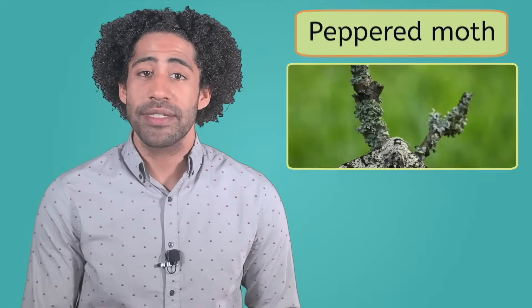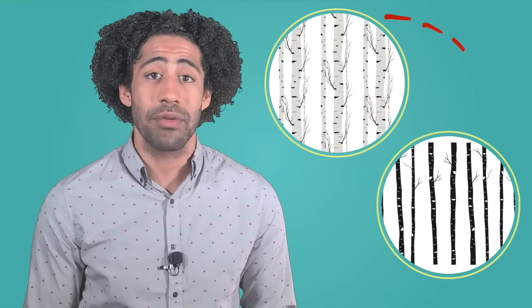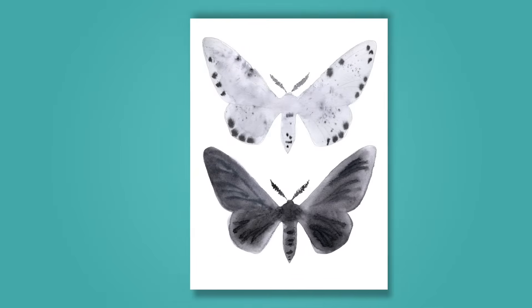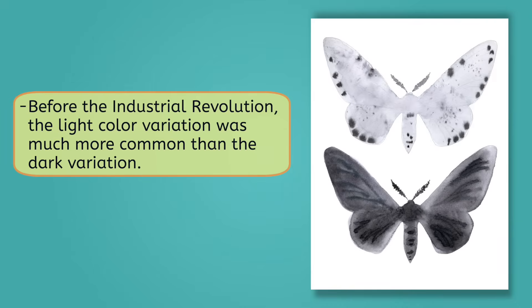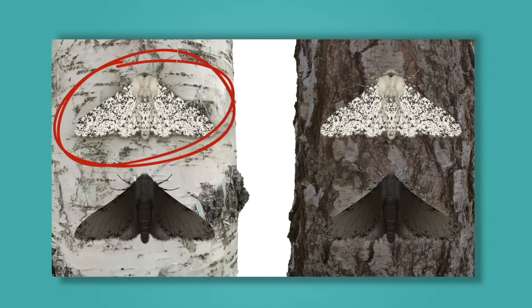One famous example of this is the peppered moth. As a result of the industrial revolution in England during the late 1800s, much of the English countryside was enveloped in black smoke. This pollution changed the color of the trees from a light, almost white color to black. As this continued, scientists in the area began to notice something strange — the population of peppered moths that called these trees home began to change color as well. Before the industrial revolution, both light and dark color variations existed in the peppered moth, but the light variation was much more common. Moths with light-colored genes were able to blend into the trees better to avoid being eaten — in other words, they had a higher fitness, which increased their chances of surviving and reproducing.